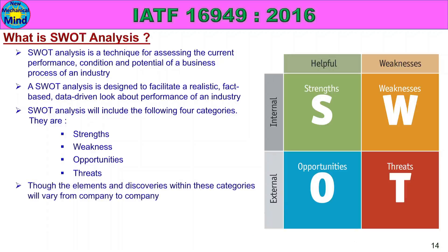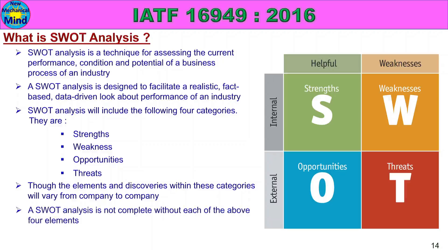Though the elements and discoveries within these categories will vary from company to company, the categories of findings are: Strengths, Weakness, Opportunities, and Threats. SWOT analysis is not complete without each of these four elements.